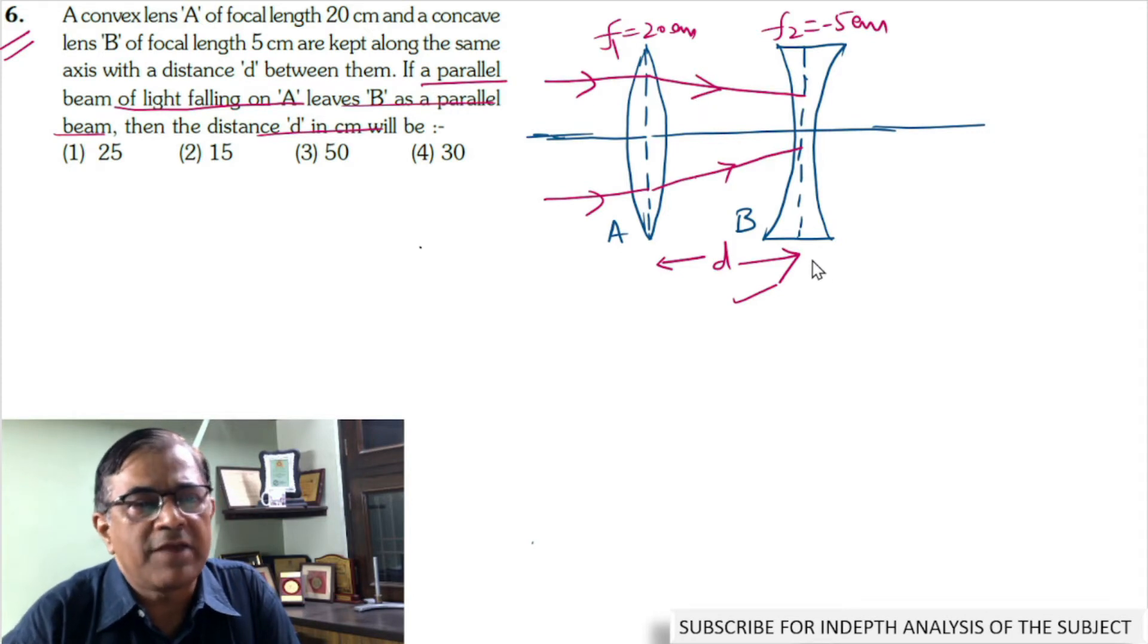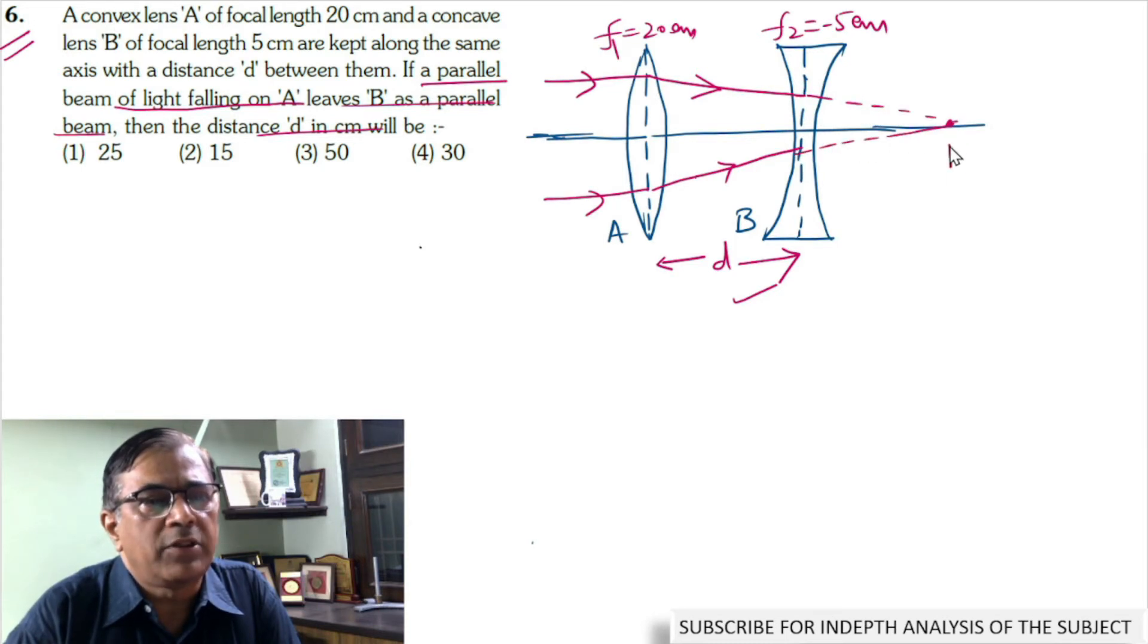Had the concave lens been absent, these rays would have met at point P on the principal axis.